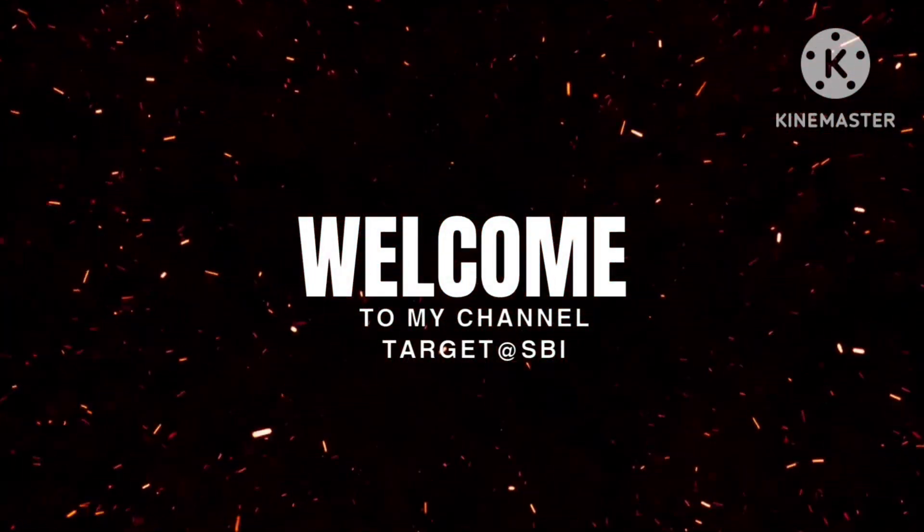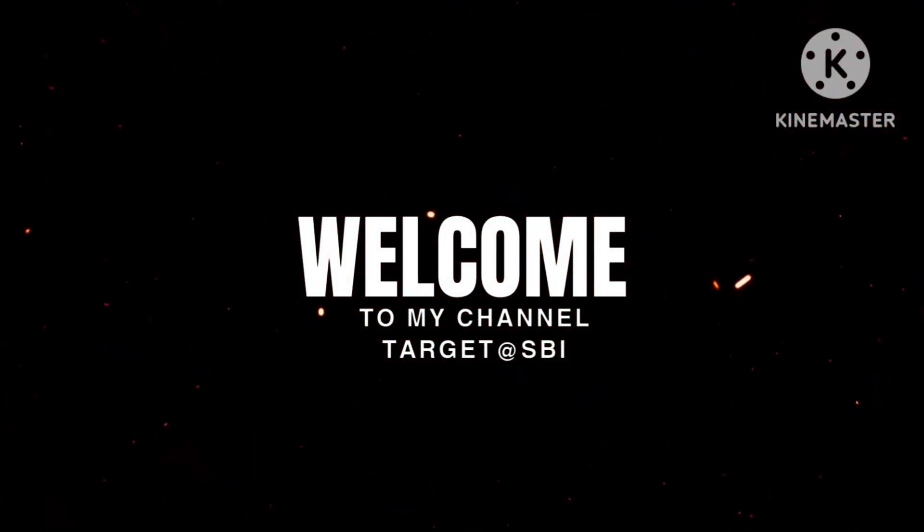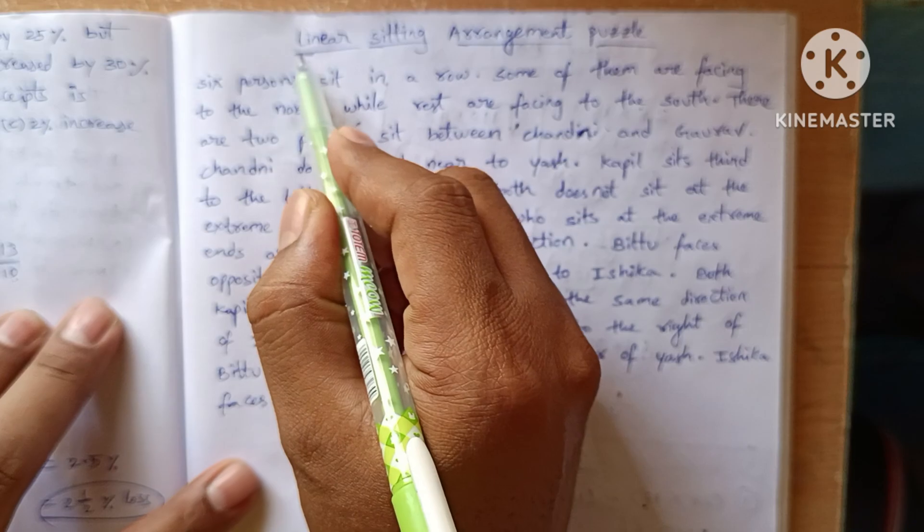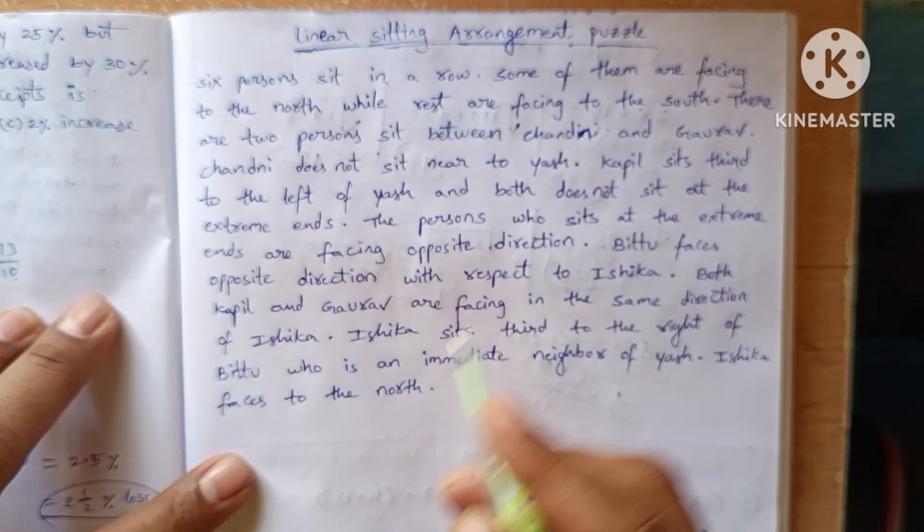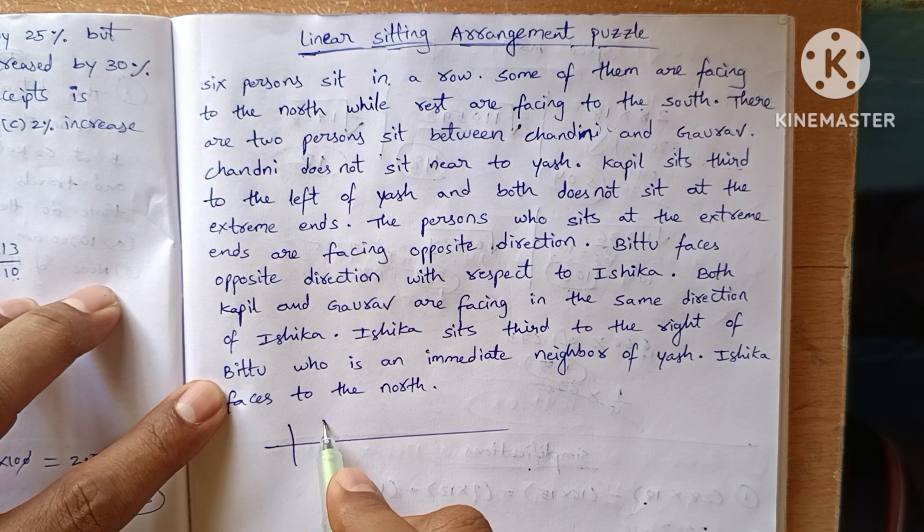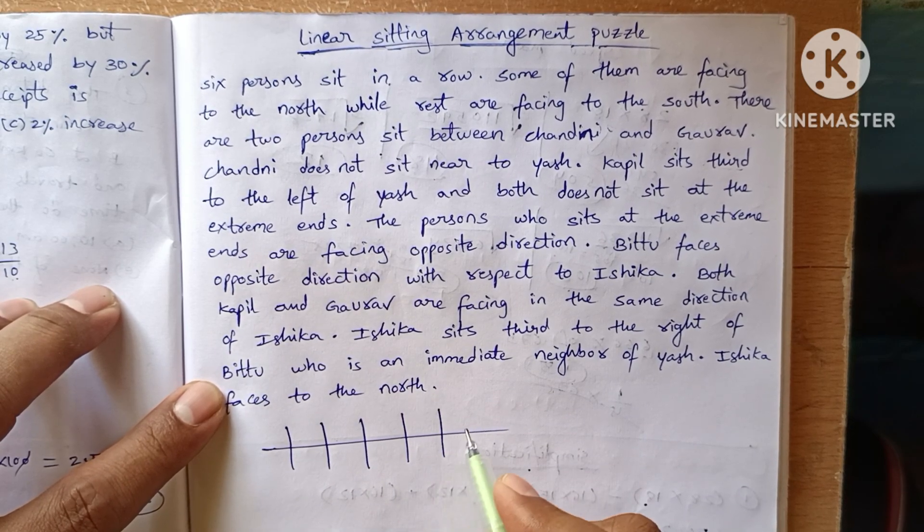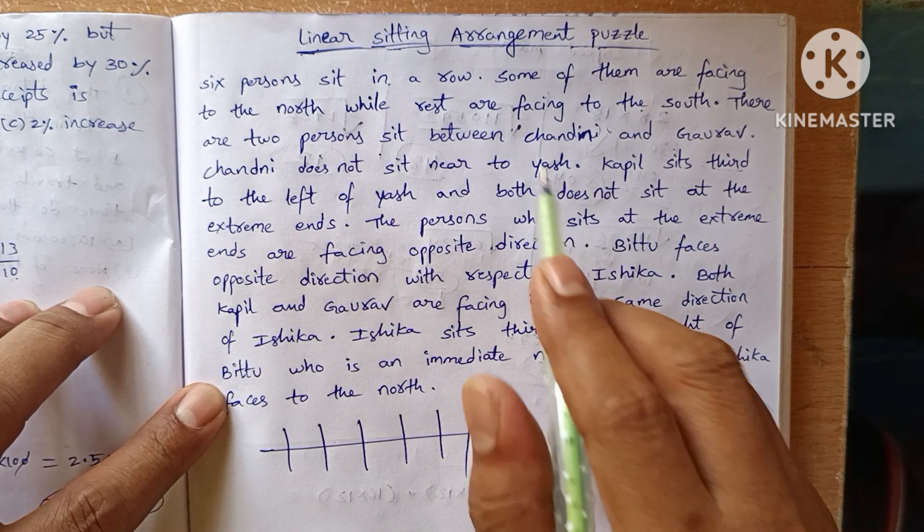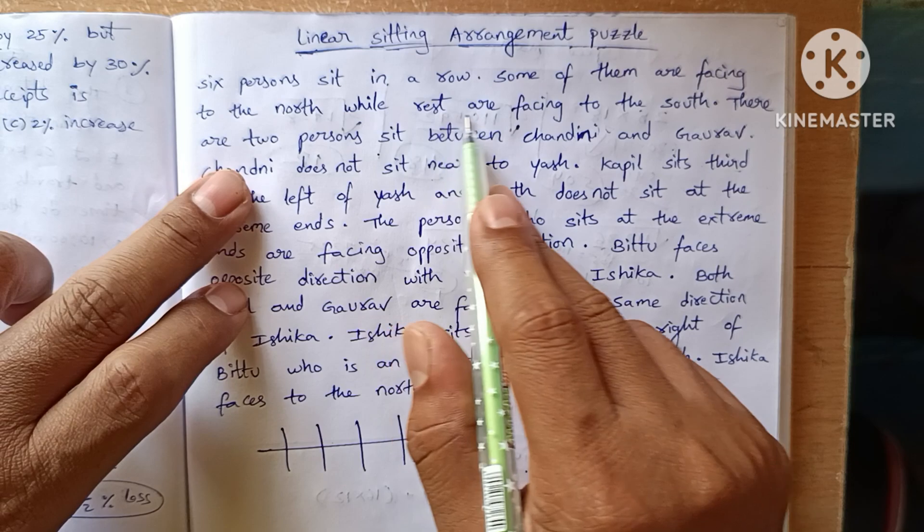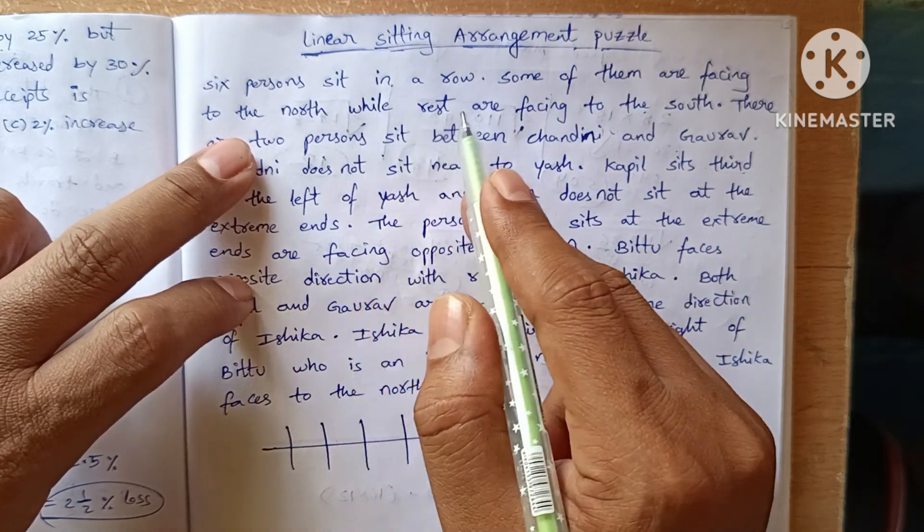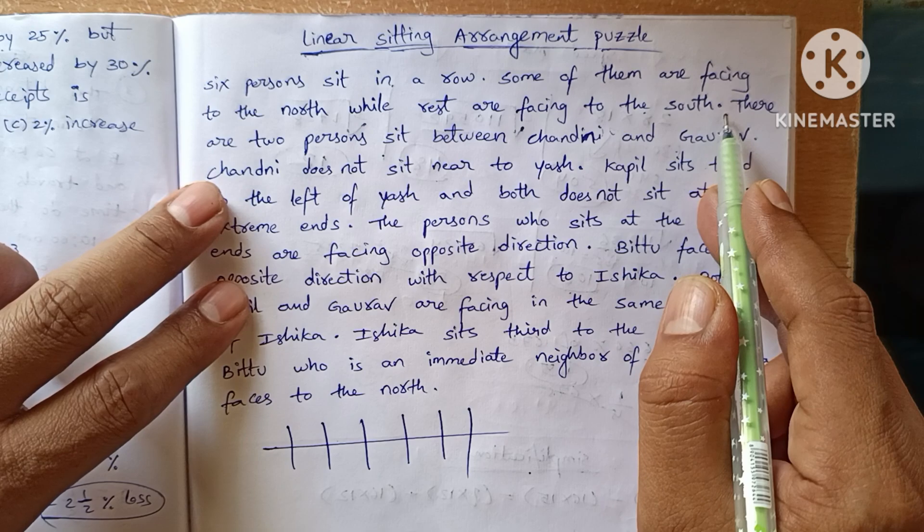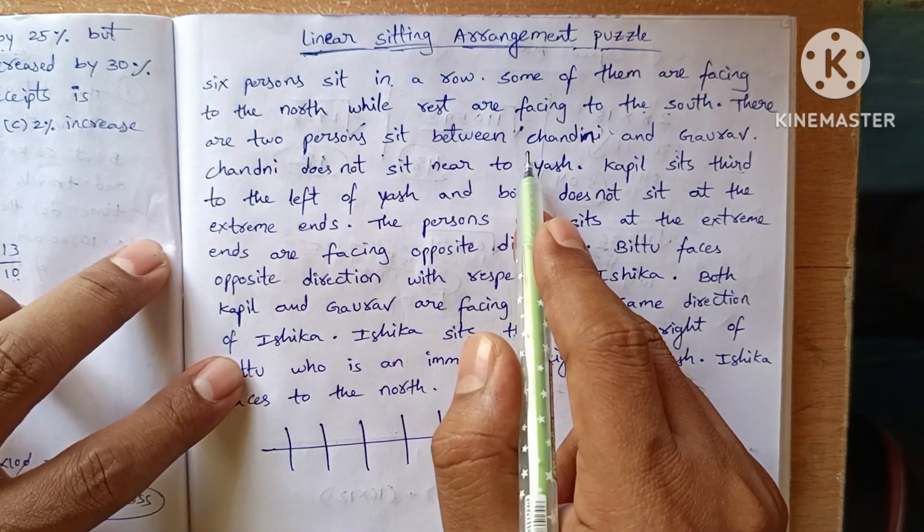Hello guys, welcome back to my YouTube channel Target SVI. Now we are going to see a linear seating arrangement puzzle. Six persons sit in a row. While some of them are facing to the north, while rest are facing to the south.